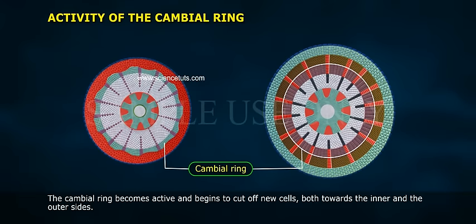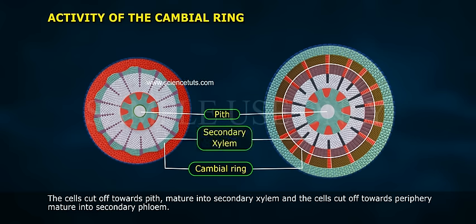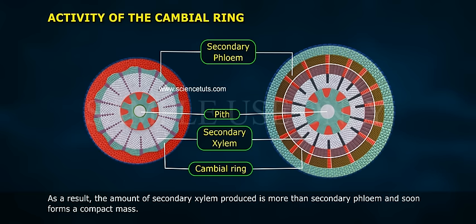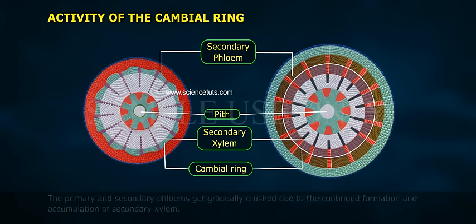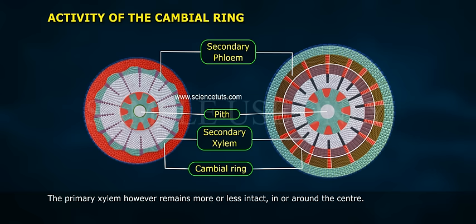Activity of the cambium ring. The cambium ring becomes active and begins to cut off new cells both towards the inner and the outer sides. The cells cut off towards the pith mature into secondary xylem, and the cells cut off towards the periphery mature into secondary phloem. The cambium is generally more active on the inner side, so the amount of secondary xylem produced is more than secondary phloem and soon forms a compact mass. The primary and secondary phloems get gradually crushed due to continued formation of secondary xylem, while the primary xylem remains more or less intact in or around the centre.